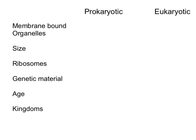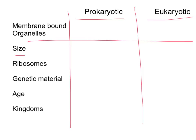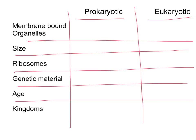We're going to look at the two basic types of cells: prokaryotic versus eukaryotic. The first comparison is whether they have membrane-bound organelles. Membrane-bound organelles are things like a nucleus, a Golgi apparatus, mitochondria, and chloroplast. A prokaryotic cell does not have membrane-bound organelles, and a eukaryotic cell does. This is our number one biggest difference between the two.